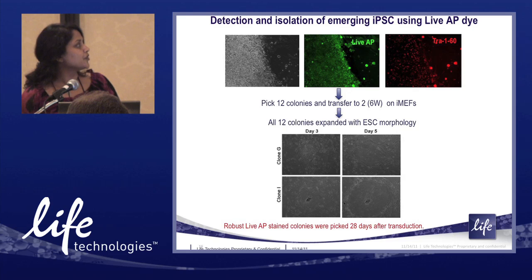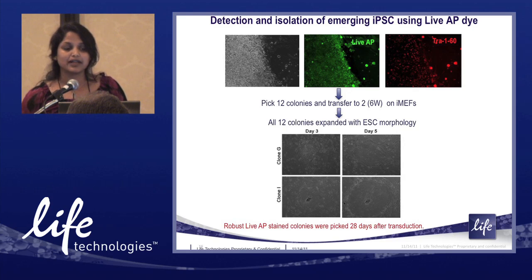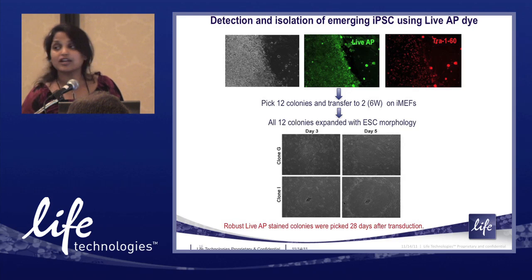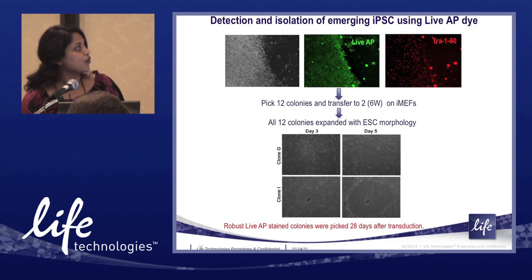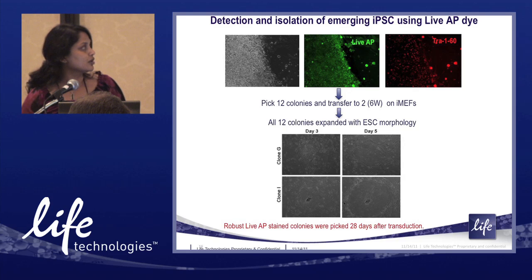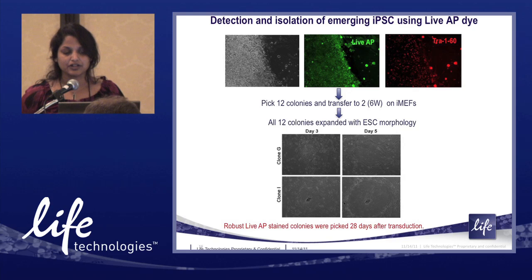This shows the first step: staining of the master plate. The colonies are not fully mature at this point, but they stain robustly with live AP. As an independent confirmation, we also stained that colony with TRA-1-60. Subsequently, we selected 12 robustly stained live AP colonies and transferred them into six-well dishes on feeders. All 12 clones expanded and retained ES cell morphology.